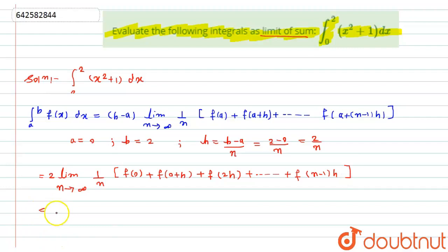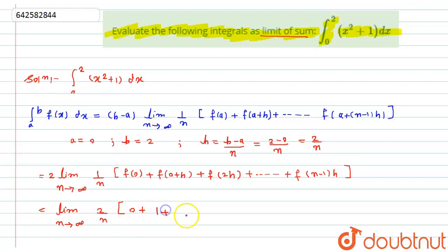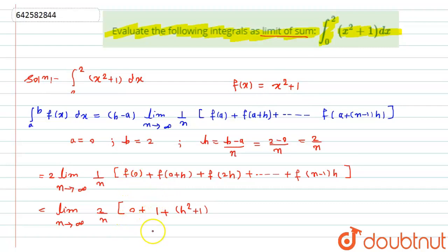Now if I try to find this, it will become the limit as n tends to infinity, 2 divided by n. Now f(0): since f(x) equals x squared plus 1, if I put x as 0, the first term will be 0 plus 1 equals 1. For the second term putting h it will be h squared plus 1. Putting 2h it will be 4h squared plus 1.